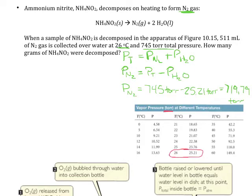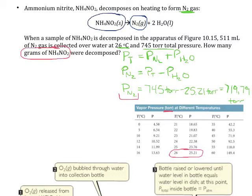So how does this help us solve the problem? Well, if we look at what they're actually asking us — how many grams of ammonium nitrate were decomposed — if we know how much N₂ gas is formed, we can use stoichiometry. Looking back at the balanced reaction, we can figure out how much of the ammonium nitrate decomposed.